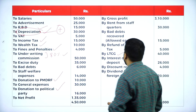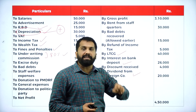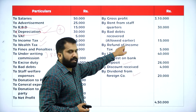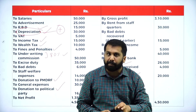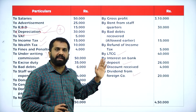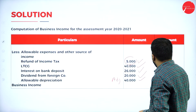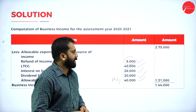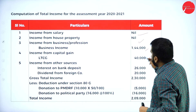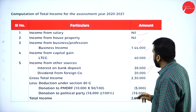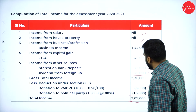Rent from staff quarters is for business purpose. Bad debts recovered - if it was allowed in an earlier year, no need to allow again. If it was disallowed in an earlier year, you are supposed to minus it now. Refund is not part of your business, so you consider it. After all calculations, you get a total of 1,44,000. Total income: salary nil, house property nil, business income 1,44,000, long-term capital gain 40,000, interest 26,000, dividend 20,000 - total income 2,30,000. Minus two donations of 5,000 and 16,000, your answer is 2,09,000.